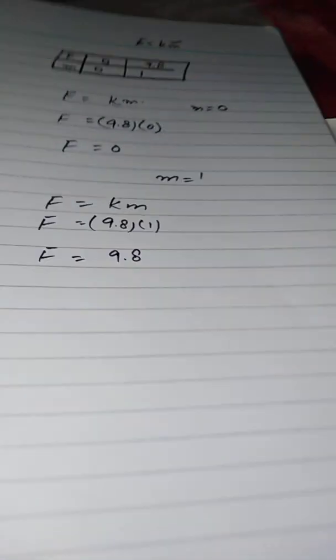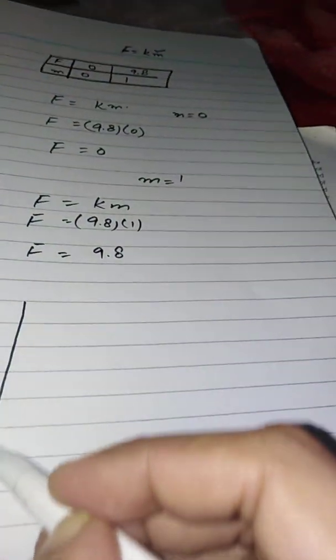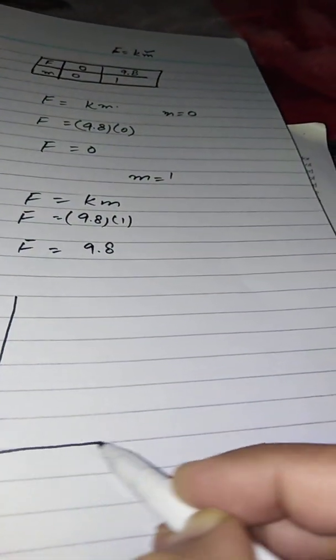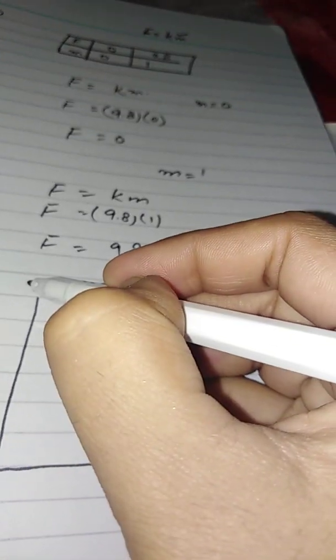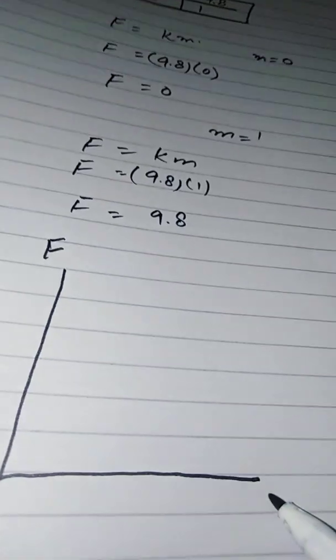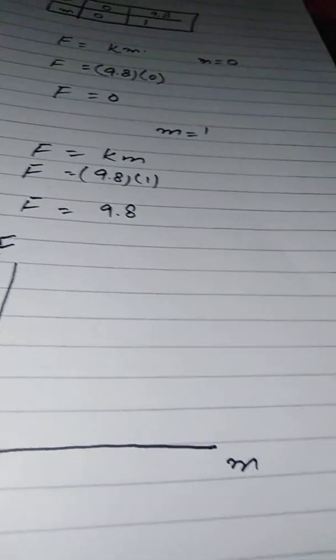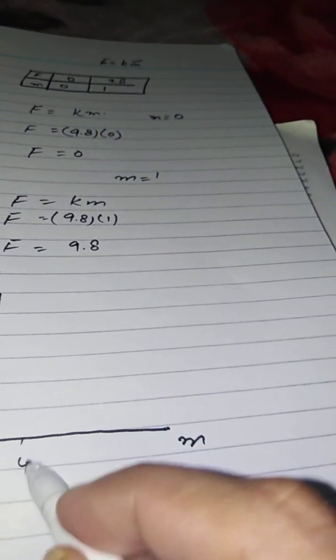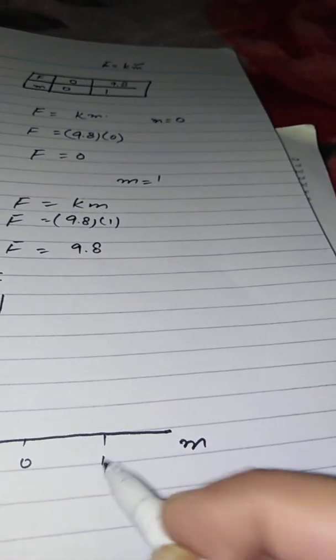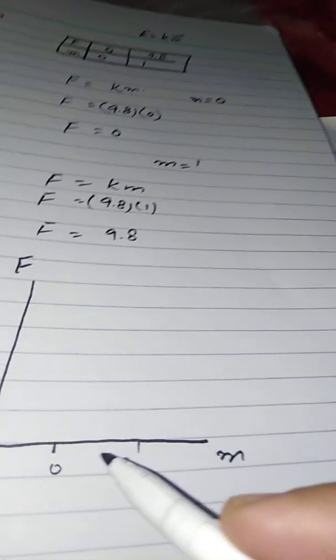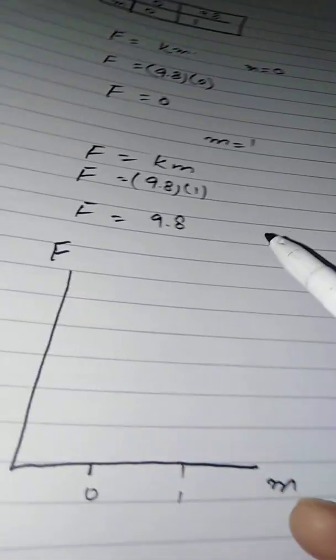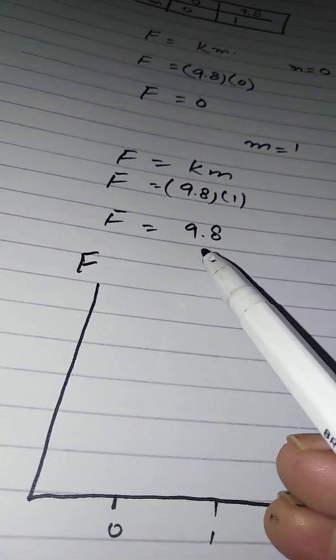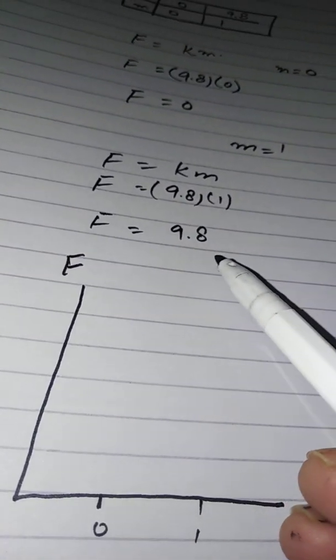Now you will draw the graph. You can use graph paper. Draw the graph of F against M. On the x-axis write 0 and 1, since those are the M values you have taken. The F value is 9.8, so now select the scale for the y-axis.